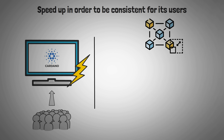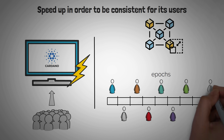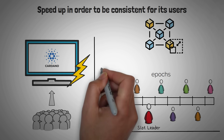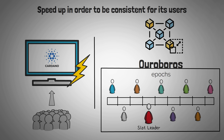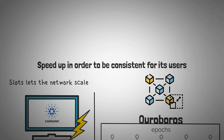Cardano solves this by using what are called epochs, which basically divide up who validates certain blocks in the blockchain. To be even more precise, they use slots, and any of the nodes — which are just computers from people or organizations running the blockchain — can be nominated to be a slot leader. These terms don't really need to mean much to you, but they are what allows Cardano's proof-of-stake to scale. Cardano calls this system Ouroboros, but Ouroboros could warrant its own video due to its complexity. The important thing is that slots can be divided up further, which lets the network scale.